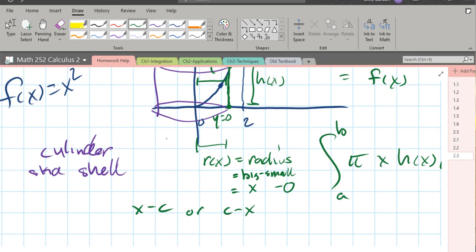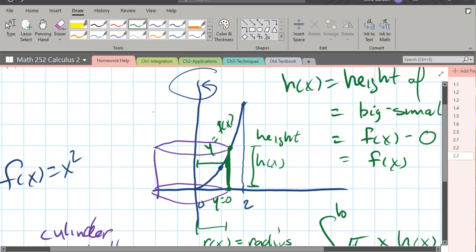So for us, we were to the right, our cross-section was to the right, or bigger than the rotation axis. So our big was x, and our small was the rotation axis x-coordinate.